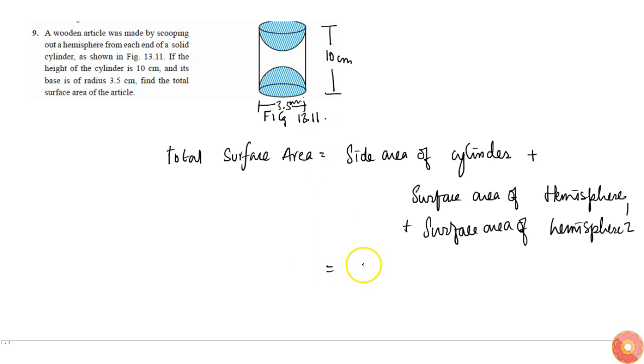...2πrh plus, since twice the surface area, I'll multiply by 2 times surface area of hemisphere which is 2πr². So this will be equal to 2πr, if I take common, times (h + 2r)...